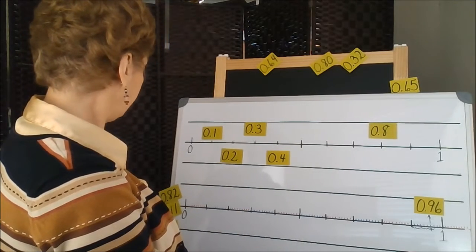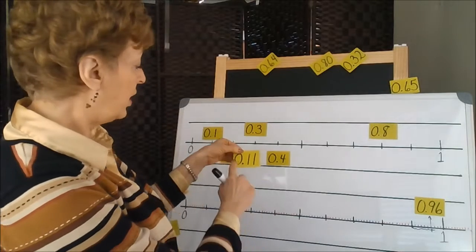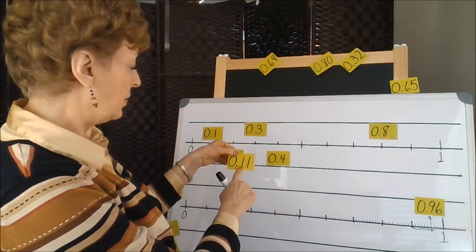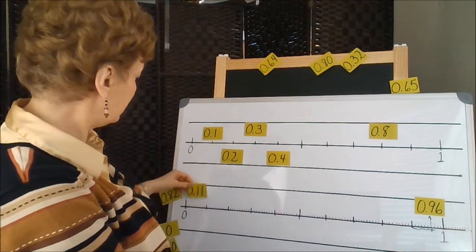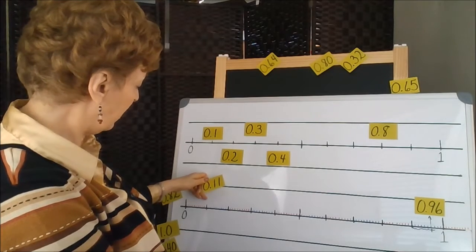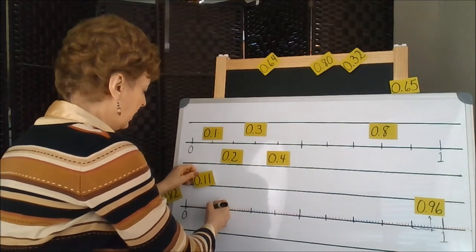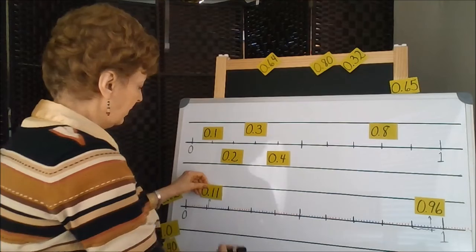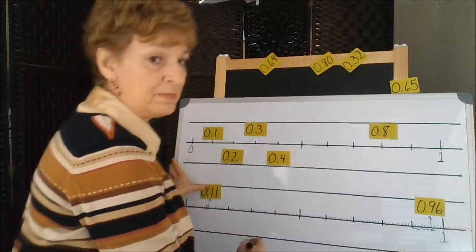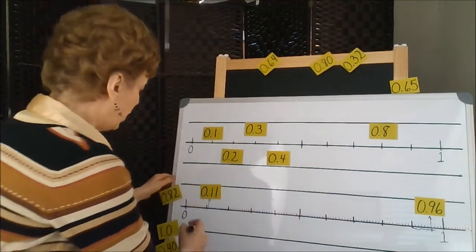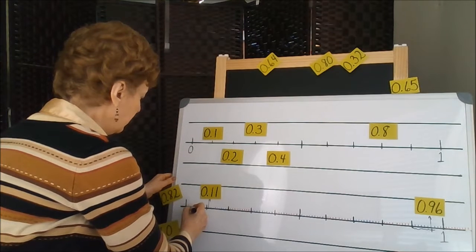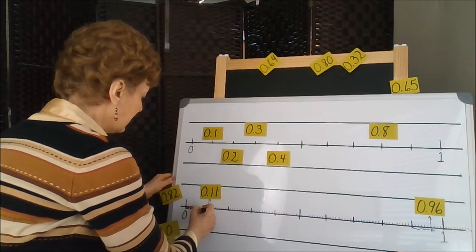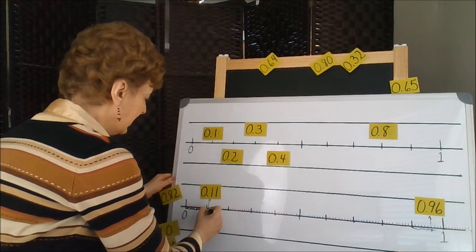Here we have 11. Well, that won't be so hard. We're going to go to, it's one more than 10, so we have a decade of 10 here, and one more would be 11. So 0.11 would go there. We would be making 11 jumps: 1, 2, 3, 4, 5, 6, 7, 8, 9, 10, 11.